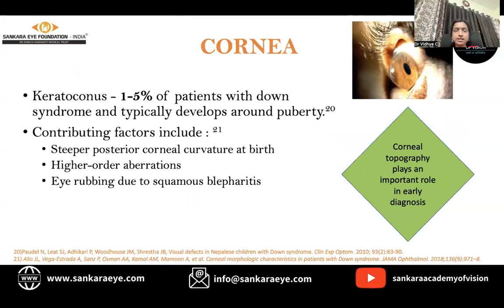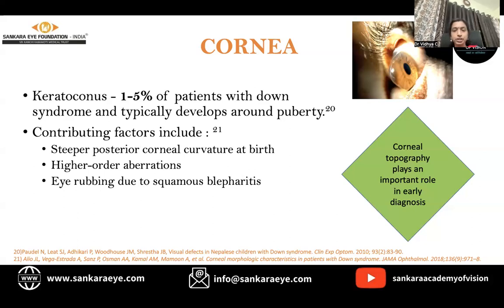Keratoconus is commonly seen in these children, with a prevalence of about 1 to 5%. It typically develops around puberty. Contributing factors include steeper posterior corneal curvature compared to normal controls, higher-order aberrations which are more pronounced, and eye rubbing due to staphylococcal blepharitis. Corneal topography plays an important role in early identification and planning for further management.